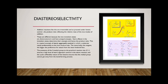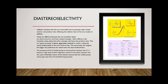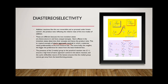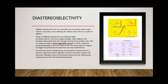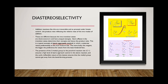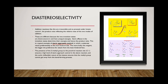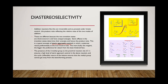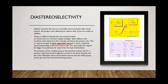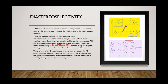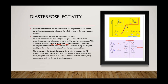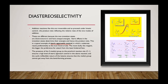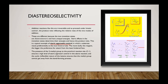Steric effects in the transition state determine the energies and also the product ratio. This is a typical example of steric approach control, in which a substrate reacts preferentially from the least hindered side. The more bulky the reagent, the greater the preference for attack from the least hindered side, as observed when lithium aluminium hydride is replaced with diisobutylaluminium hydride.